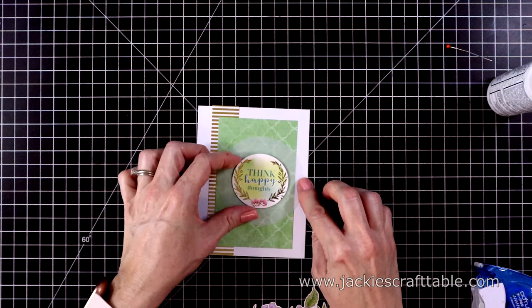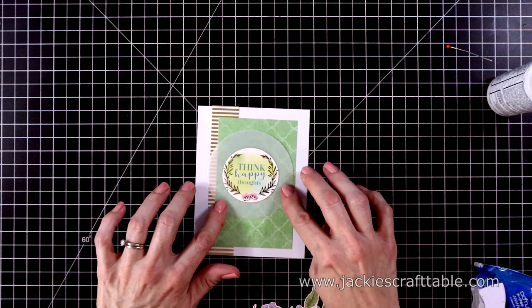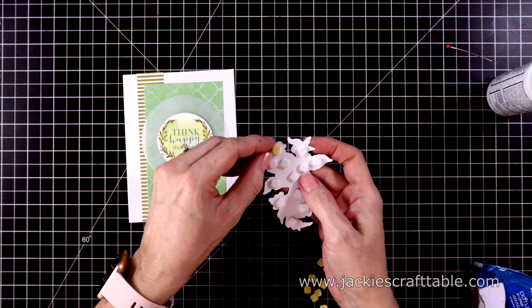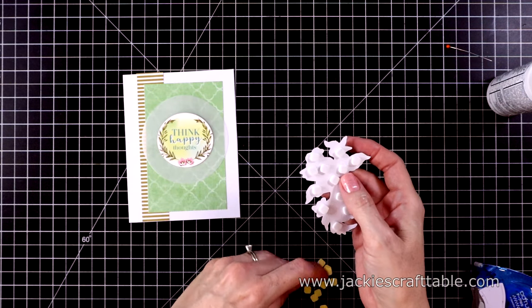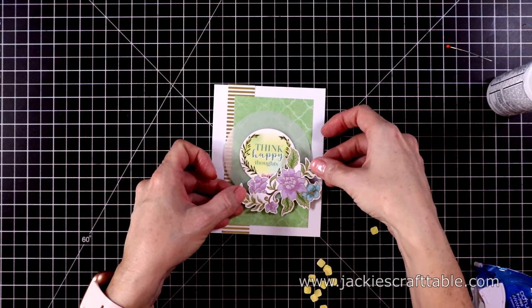But I'm going to glue this. I know you could stick it, but I like to add a little bit of glue to it just to ensure that it's not going to fall off. So I'll glue it in the middle of the vellum. And then I popped up my floral sprig with some foam squares. And I'll place that at the side of the sentiment.